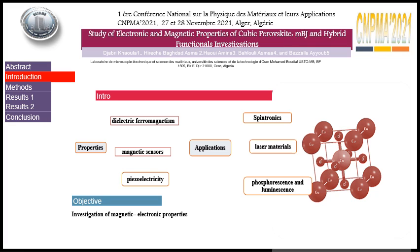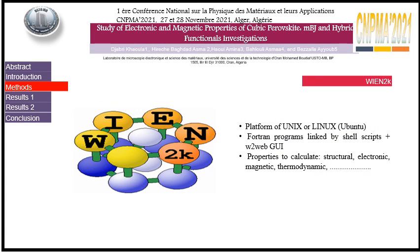We use the Wien2K code to calculate our results, which is a platform on Unix, using a FLAPW program linked by shell script Wien2Web.